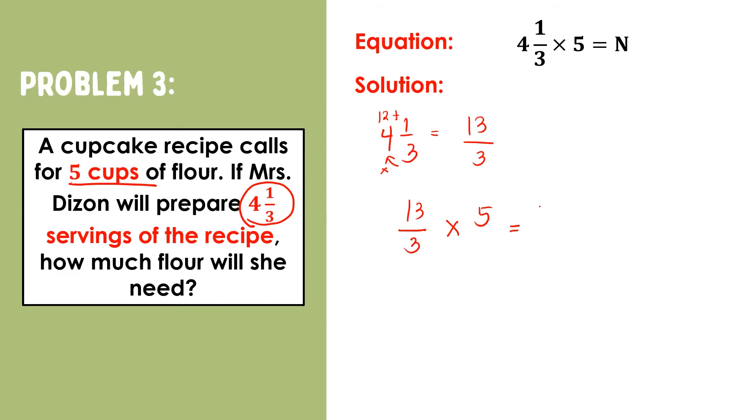Now we have a whole and a fraction. So, let's multiply the whole and the numerator. That is, thirteen times five, will have sixty-five. Then copy the denominator three. Sixty-five over three is an improper fraction, so we need to regroup.